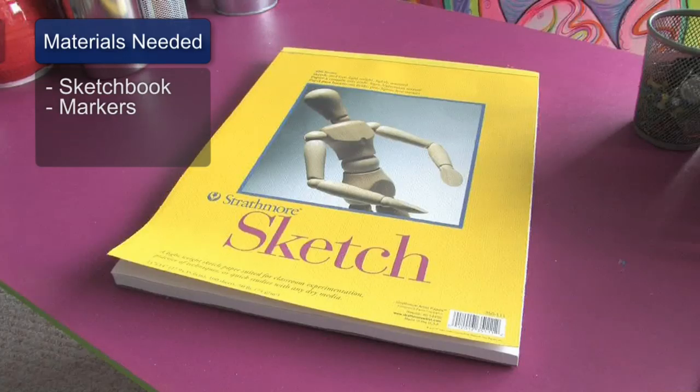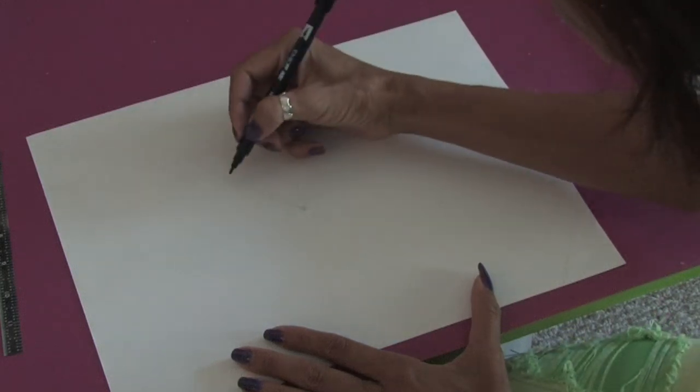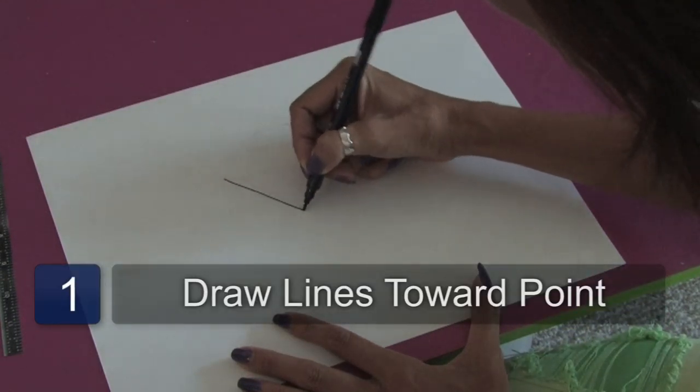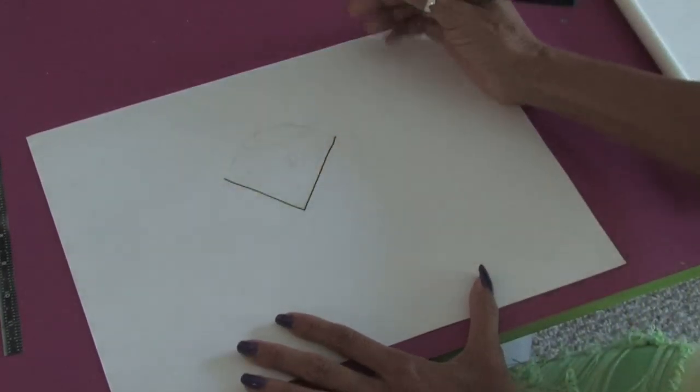You'll need a sketchbook and some black markers to draw with. I'm going to start off with one line coming to a bottom point and then the other line, so it almost looks like a triangle.